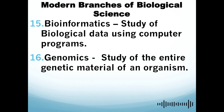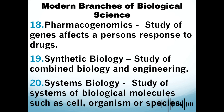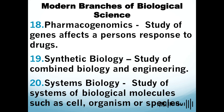Genomics is the study of the entire genetic material of an organism, usually found in the genes. Molecular biology is the study of molecules that make up the cell of a living organism. Pharmacogenomics is the study of how genes affect a person's response to a drug — a combination of pharmacology and genomics, examining side effects and adverse effects of drugs. Synthetic biology combines biology and engineering. Systems biology is the study of systems of biological molecules such as cells, organisms, and species.